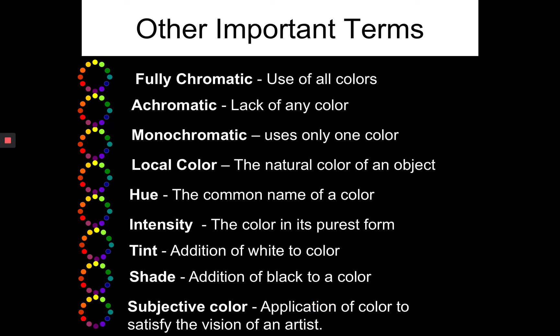Here are some other terms. Fully chromatic means that it has all of the colors. Achromatic means that it lacks any color at all — that means black, white, and gray. Monochromatic means that it uses only one color. Local color is the natural color of an object. Hue is just the name of the color — so red, taupe, mauve, teal — the name of the color. Intensity is the color in its purest form, sometimes called saturation.